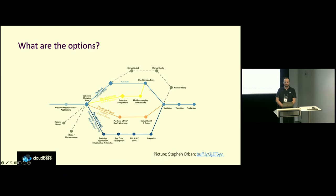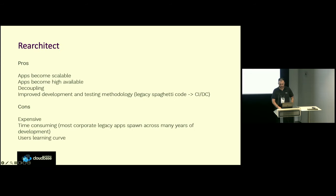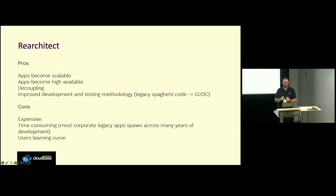What are the options when we try to migrate? This is a diagram initially posted in a blog post by Stephen Orban, an ex-AWS VP who currently works at Google Cloud. He talks through various strategies. The first — and what I consider the state-of-the-art and perfect solution — would be to re-architect your application. This is the best one because you make your application more scalable, you decouple, you get rid of the spaghetti code, and you improve your CI/CD processes. The disadvantage is that if you developed an application over ten years, it's probably going to take a solid five years to re-architect. So it's expensive in terms of resources and time.